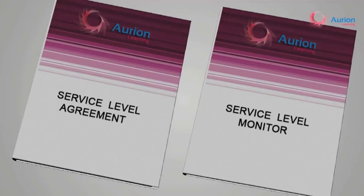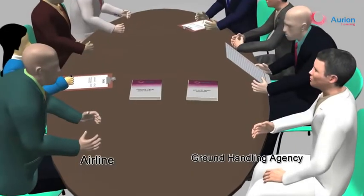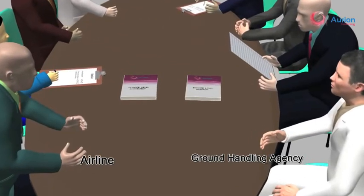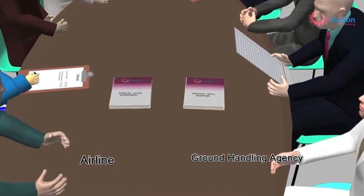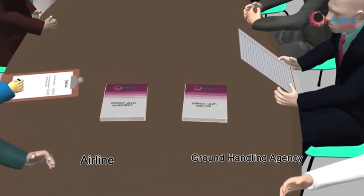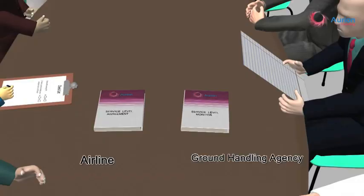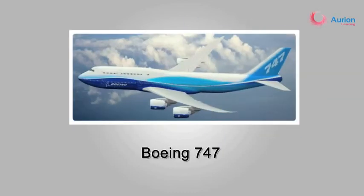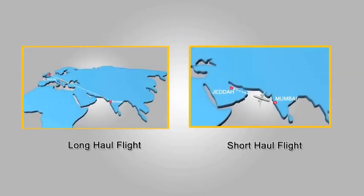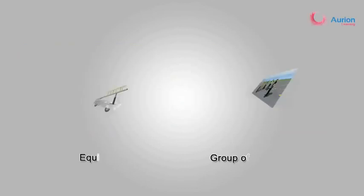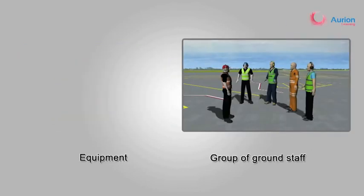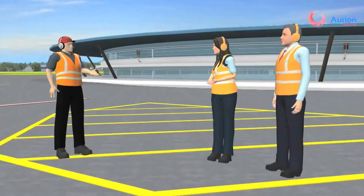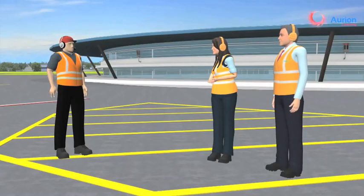Real-time information is the key to on-time service delivery and end-to-end reporting. Billing for various flights is done with respect to various factors decided between the airline and the ground handling agency during the formation of SLA and SLM. These mainly depend on the type of aircraft and the nature of flights, as well as manpower and equipment requirements.